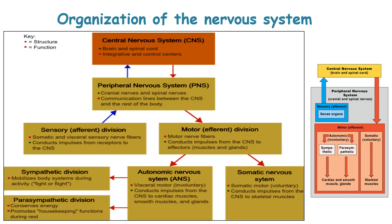On the other hand, the motor division comprises motor nerve fibers which conduct impulses from the central nervous system to the effector organs, which include the glands and the muscles. Within the motor division, we have two subdivisions: the autonomic nervous system and the somatic nervous system. The somatic nervous system conducts impulses from the central nervous system to the skeletal muscles that you voluntarily control.